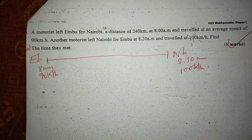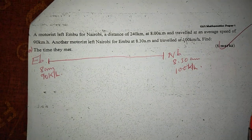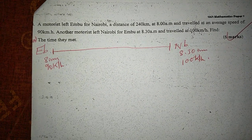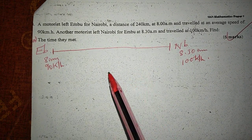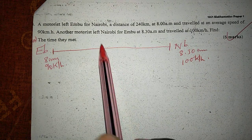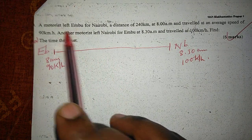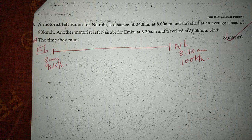We are being asked to find the time these people met. We can first get the relative distance — specifically, the distance covered by the first motorist before the second one started to move.